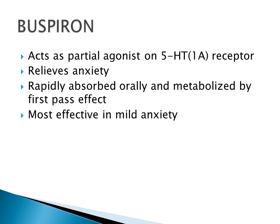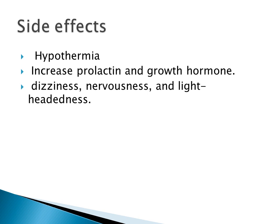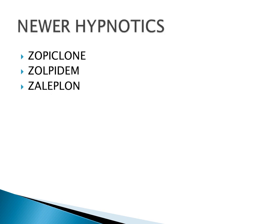Buspirone is a newer anxiolytic drug that acts as a partial agonist on the 5-HT1A receptor subtype to relieve anxiety. It is rapidly absorbed orally and undergoes first-pass metabolism. Side effects include hypothermia, increased prolactin and growth hormone, dizziness, nervousness, and lightheadedness. Buspirone is safer than benzodiazepines because it does not impair motor coordination.